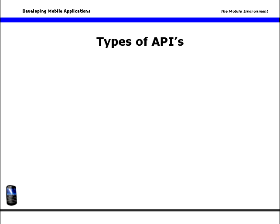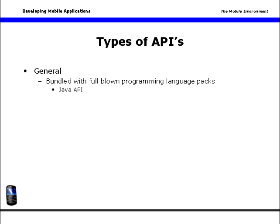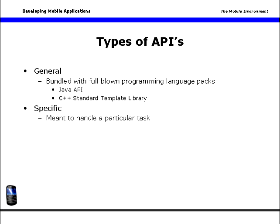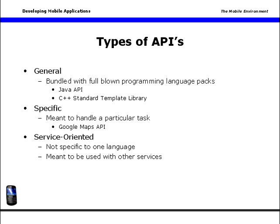There are several types of APIs. General APIs are bundled with full-blown programming language packs, such as the Java API or the C++ Standard Template Library. Specific APIs are intended to handle a particular task — for example, the Google Maps API is used just to program Google's mapping function, and developers use it to program that specific function. Then there are service-oriented APIs, not specific to one language, but meant to be integrated with other services — for example, a Google Map layered with local restaurant info that integrates a restaurant search service with the Google Maps API.